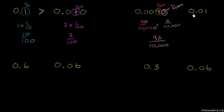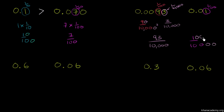Now let's think about this number 0.01. This 1 right over here is in the hundredths place, so it literally represents one hundredth. So how can we compare one hundredth to 93 ten-thousandths? Well, what's one hundredth in terms of ten-thousandths? Multiply both the numerator and denominator by 10 twice — or by 100. Multiplying by 10 once gives 10 ten-thousandths; multiply by 10 again, you get 100 ten-thousandths, which is the same thing as one hundredth. So here it becomes very clear: 100 ten-thousandths is definitely larger than 93 ten-thousandths.